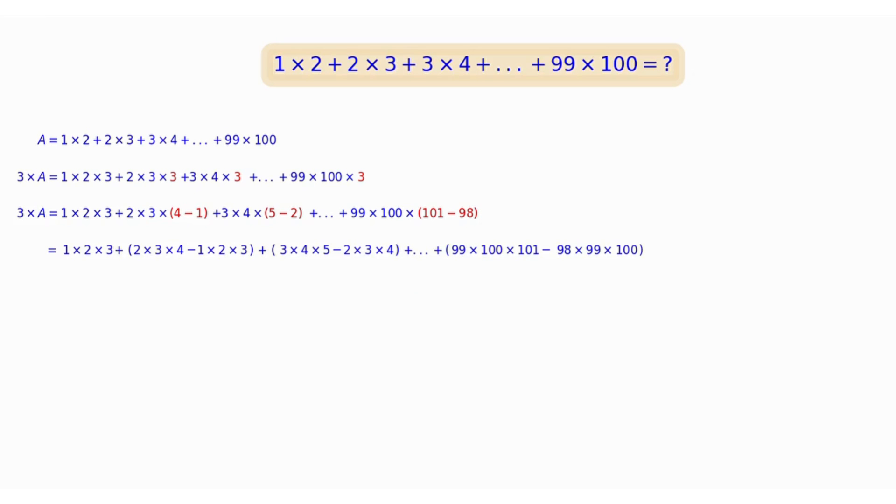Redundant terms appear more visibly by expanding the whole form. One can observe that each of the terms n times n plus 1 times n plus 2 is cancelled out by the counterpart with the minus sign inside the next bracket for all n from 1 to 98.